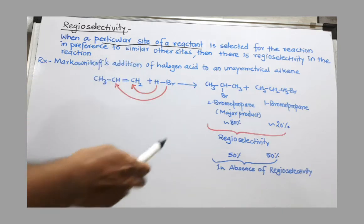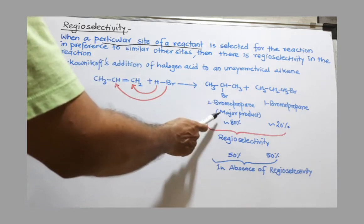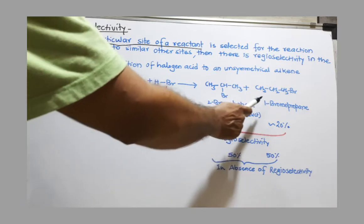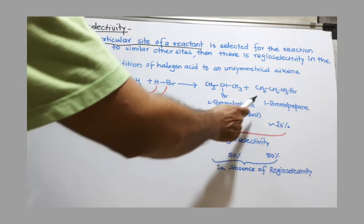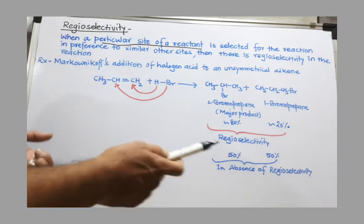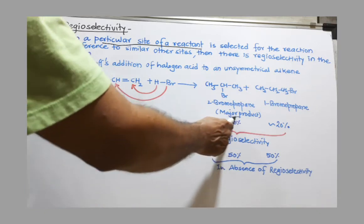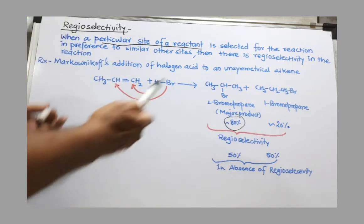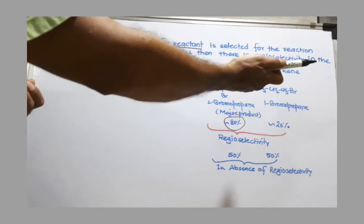Instead of that, we get 2-bromopropane as a major product and 1-bromopropane as a minor product. About 80% product will be of 2-bromopropane. So one is selected over another.